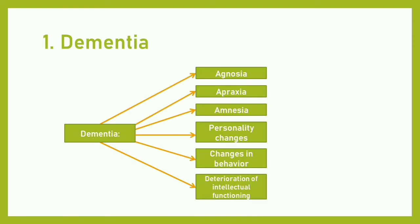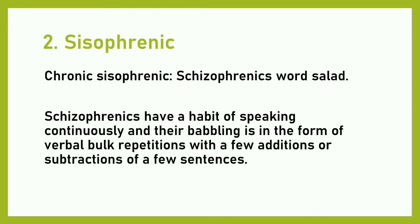First is Dementia. People with dementia show several disorders such as hyponosia, apraxia, amnesia, personality change, change in behavior, and deterioration of intellectual functioning.